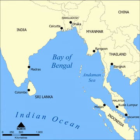Cellular Jail, or 'Black Waters', was built in 1896 on Ross Island, a part of the Andaman Island chain. As early as 1858, this island was used as a British penal colony for political prisoners facing life imprisonment.